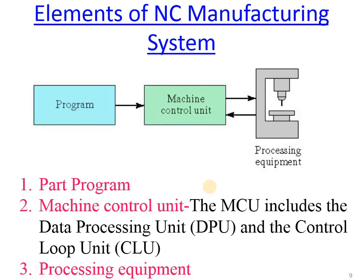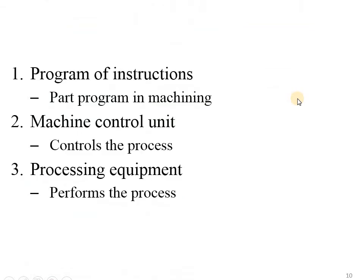The elements of the NC manufacturing system have three major parts: first is programming, second is the machine control unit, and third is processing equipment. The machine control unit consists of a data processing unit (DPU) and a control loop unit (CLU). The last element — processing equipment — is the actual numerical control machine.